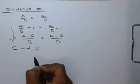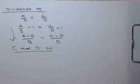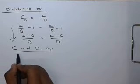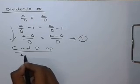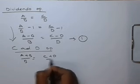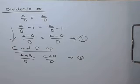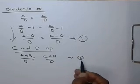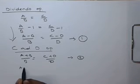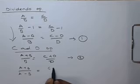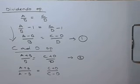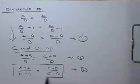Next we combine both operations. It is called the componendo and dividendo operation, or C&D operation for short. This operation is very useful in solving many problems. Using componendo we got (a + b)/b = (c + d)/d, and using dividendo we got (a - b)/b = (c - d)/d. Combining these two, we get (a + b)/(a - b) = (c + d)/(c - d).